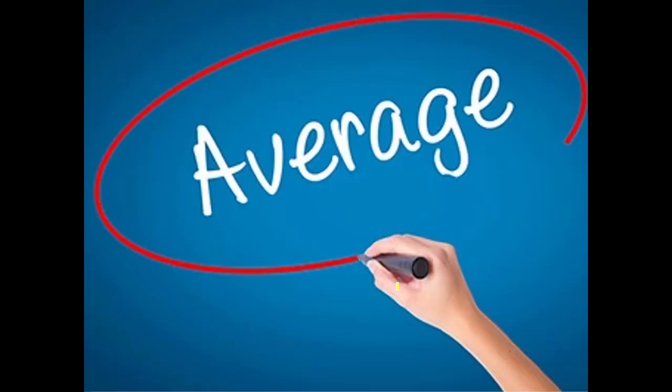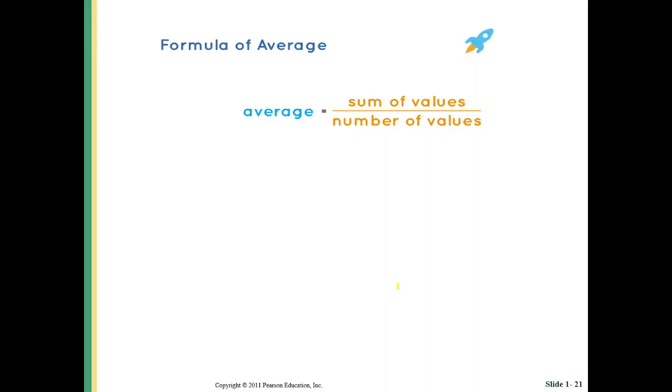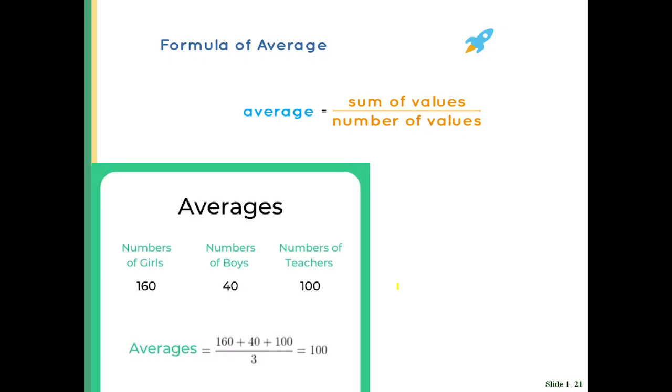Next we have the average topic, in which you only need to know the formula: sum of values over number of values. How many values are there and what's their count - divide them to get average. For example, if number of girls is 160, number of boys is 40, number of teachers is 100, then add these up, count is 3, so answer is 100. You could also be asked for number of values given the average and sum. If average is 100 and there are girls, boys, and teachers, the total count is - average equals 100, number of values is 3, multiply to get 300 as the sum. Practice these questions. Good luck and thank you.